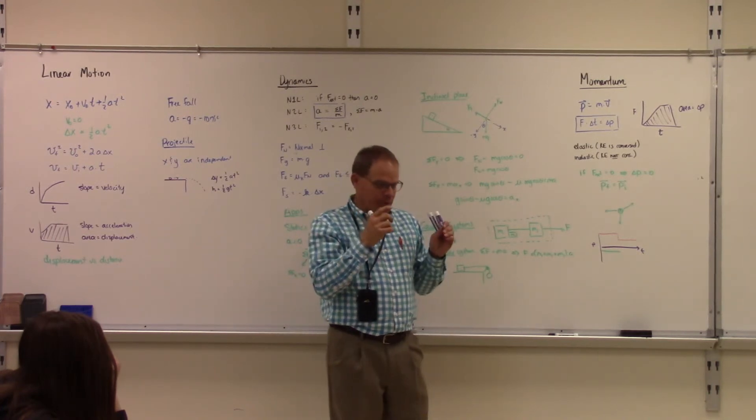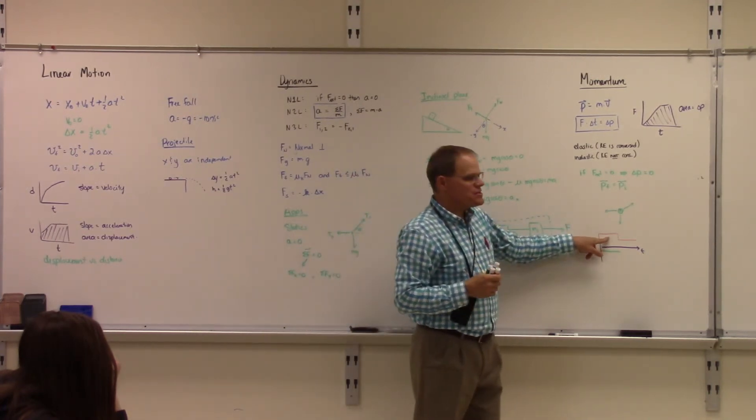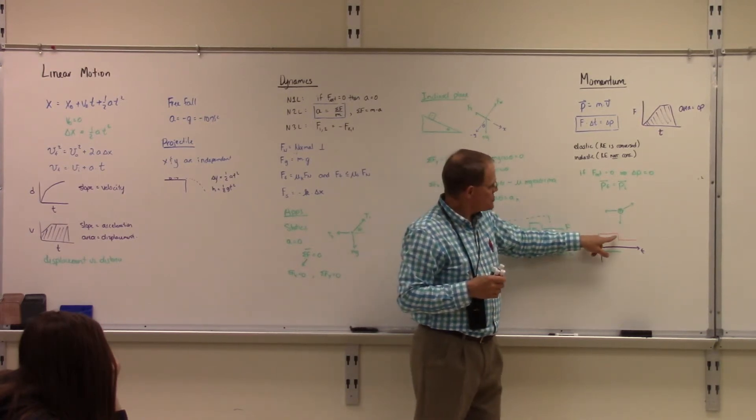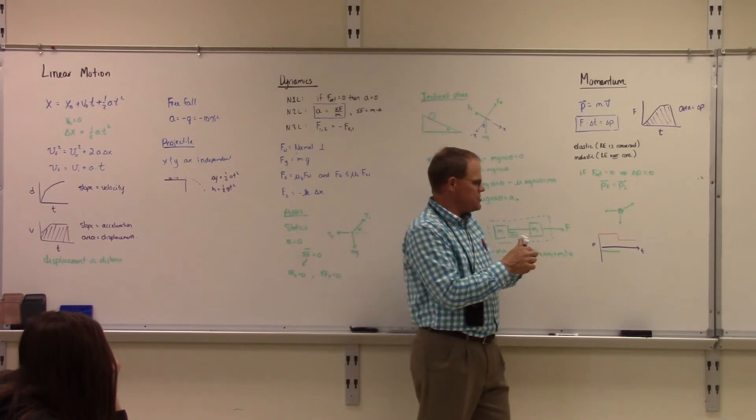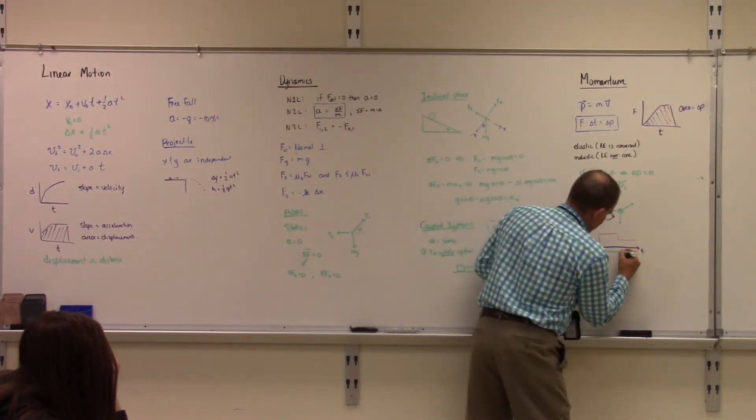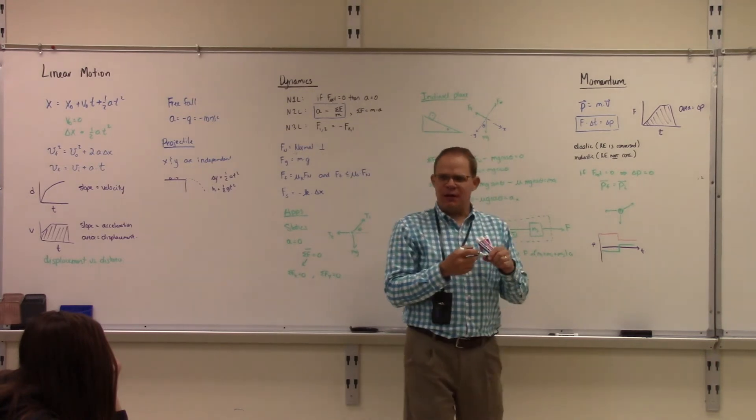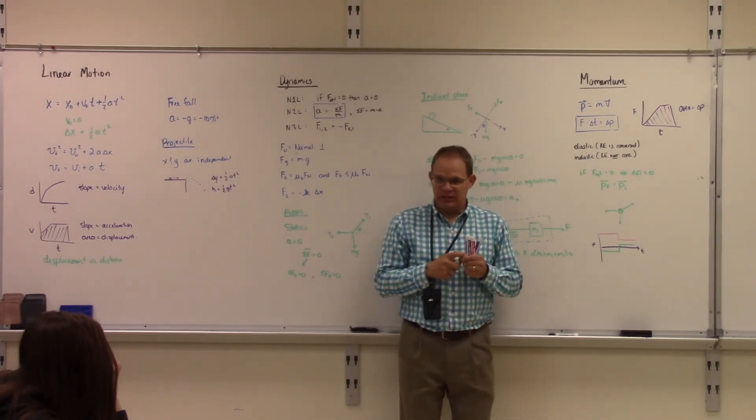Well remember, momentum's going to be conserved. So whatever momentum this guy loses, this guy's got to gain. So if this guy loses two units of momentum, what does the green guy got to do? He's got to gain two units of momentum. So you can figure out what the graphs look like using that idea.